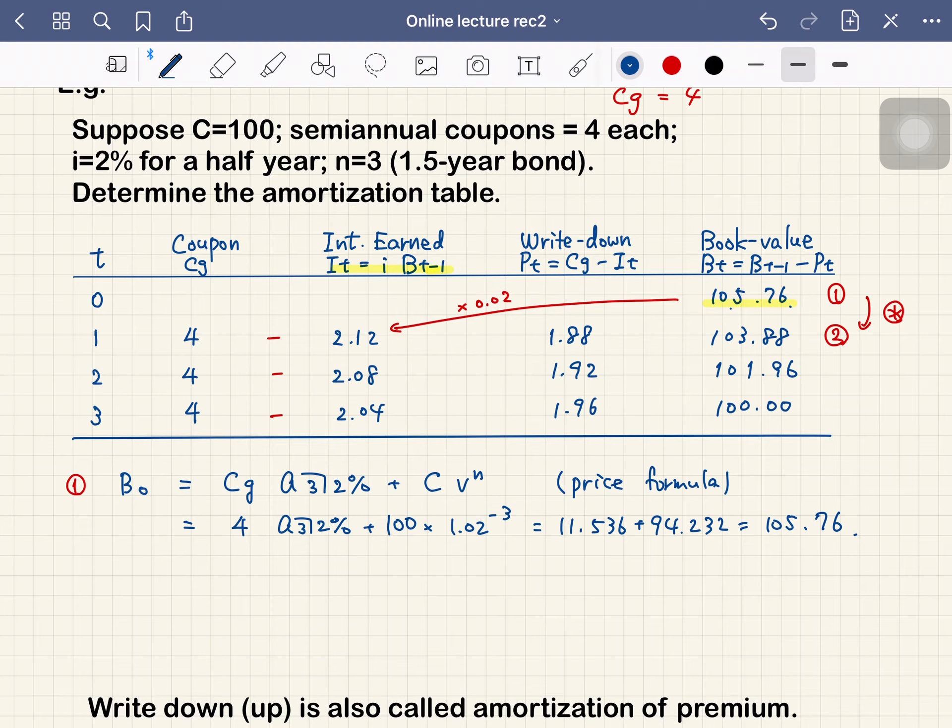One remark: to get B1 equals 103.88, you can subtract 1.88 from 105.76. One way to calculate this is B0 minus the write down, so 105.76 minus 1.88 equals 103.88. But also, you can use the price formula again to calculate B1.